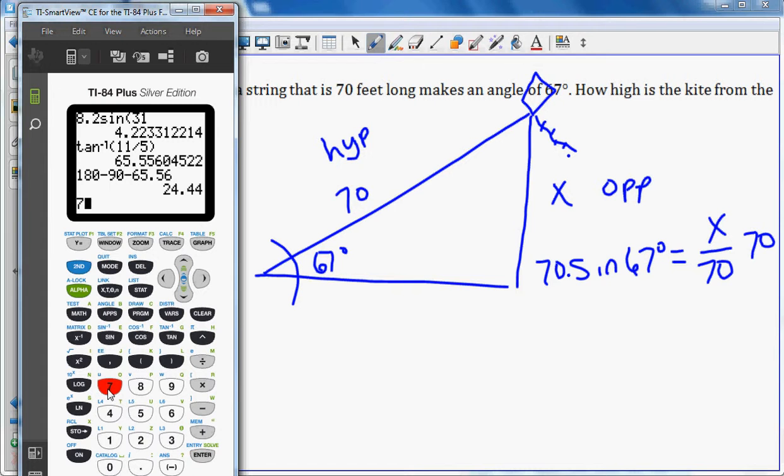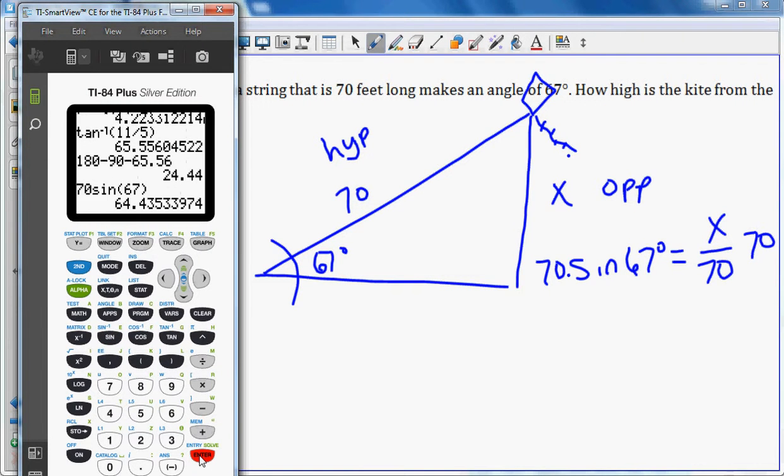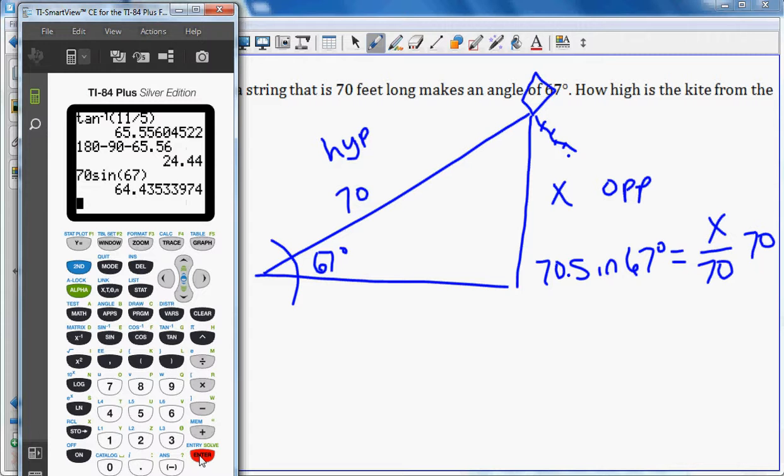The kite is 64.435 feet above the ground.